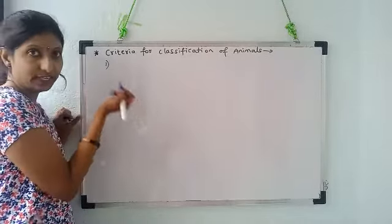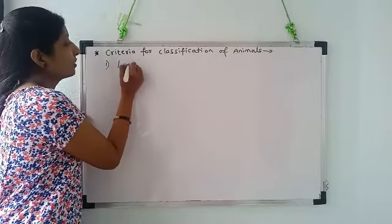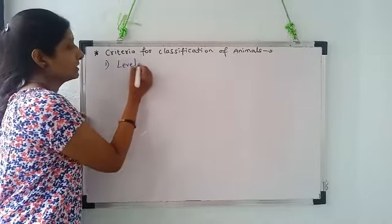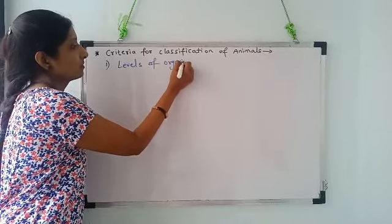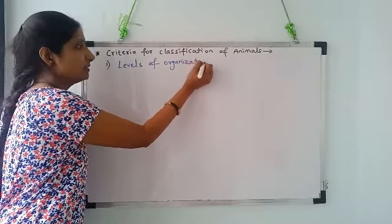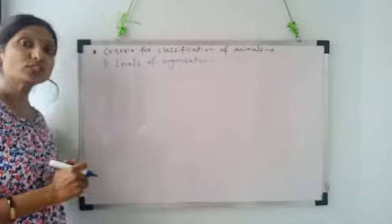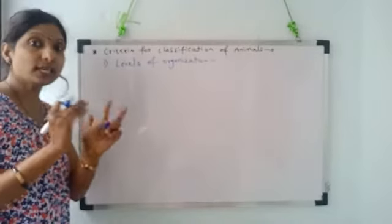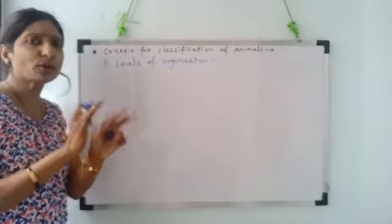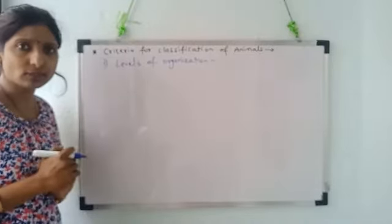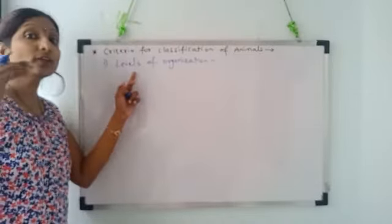Students, the first criteria we studied was levels of organization or grades of organization. In case of some animals, the body is made up of only a group of cells but they are not formed into tissues or organs. They have only cells in the body but no tissues, organs or organ systems. That is called cellular grade of organization.